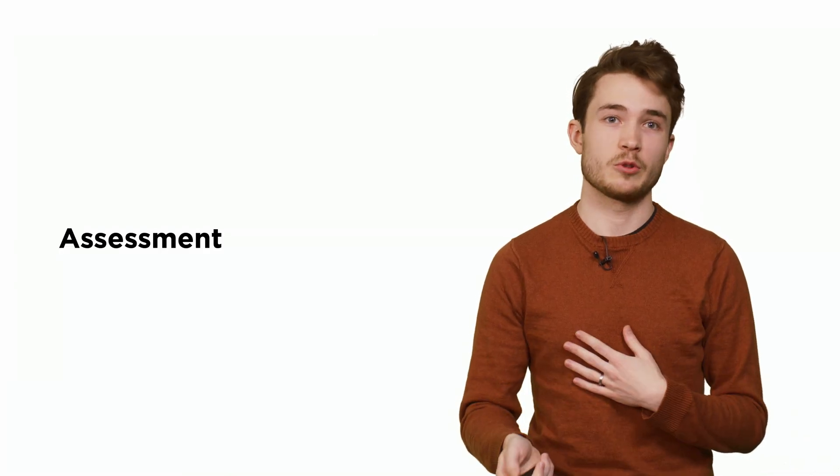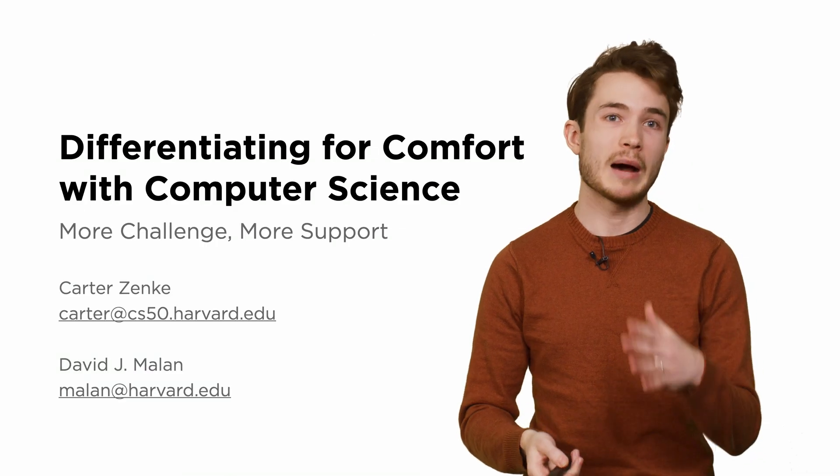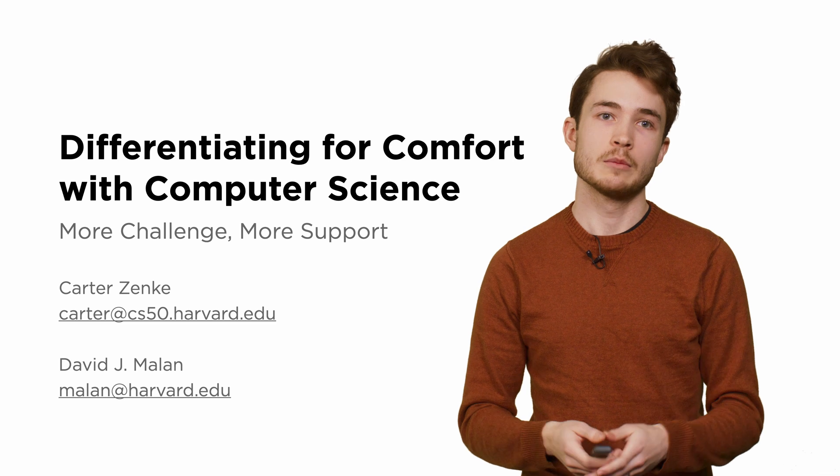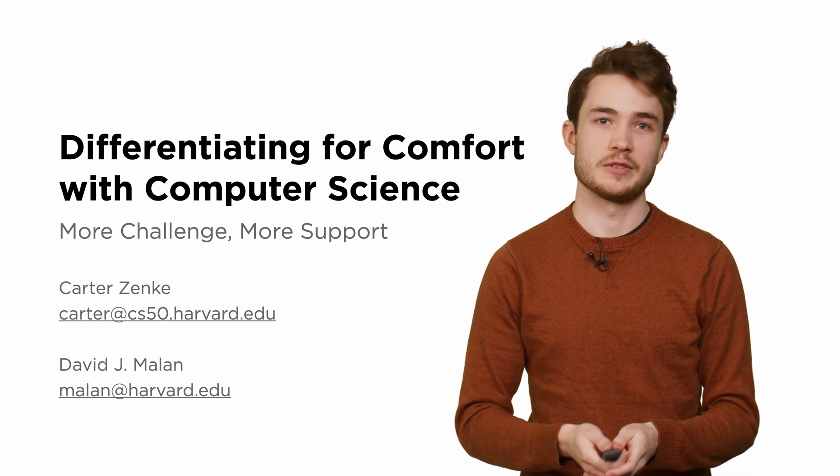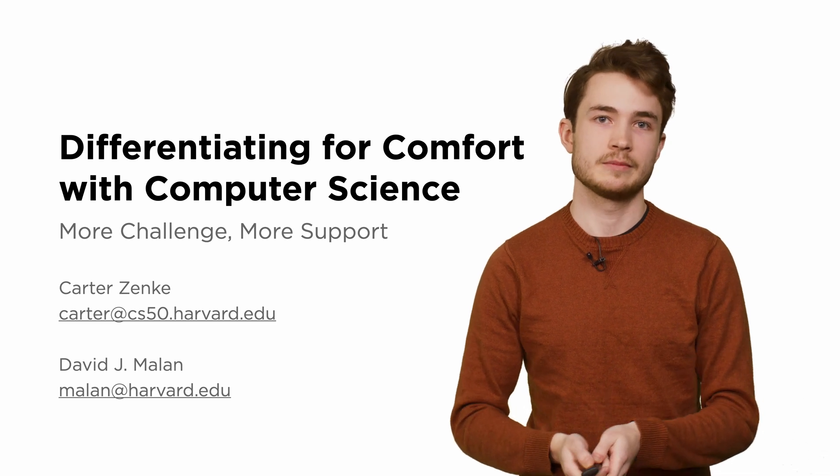What this often means is that at the end of the term, students who are less comfortable, more comfortable, or somewhere in between have the same distribution of grades. This, then, is how we differentiate for comfort with computer science. My name is Carter Zanke — please feel free to ask us any questions you might have. Thank you.